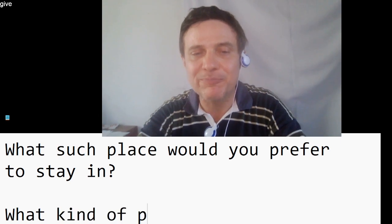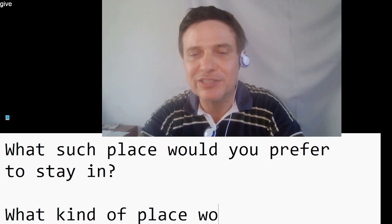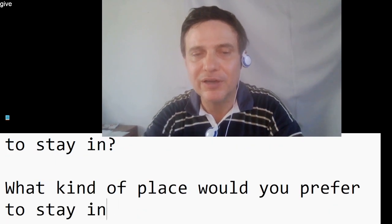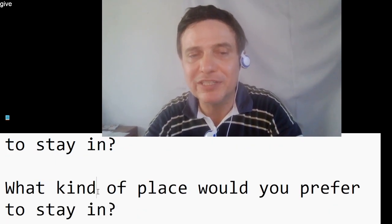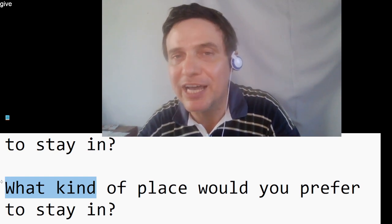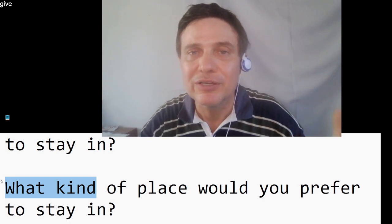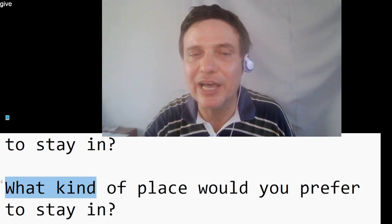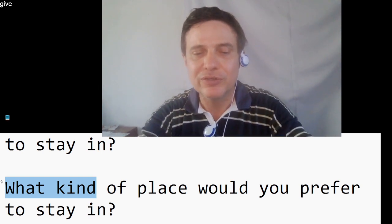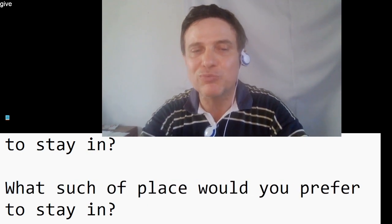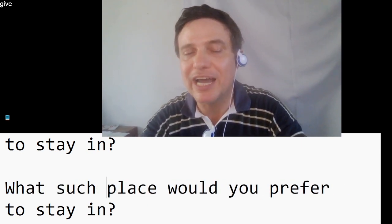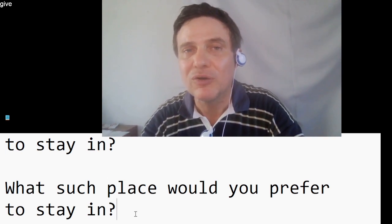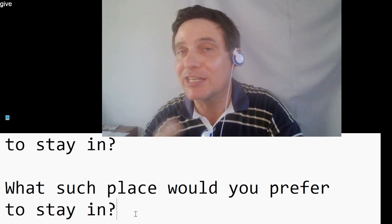Such equals similar to. In this sentence, 'what such place would you prefer to stay in?' — it's similar to asking, 'what kind of place would you like to stay?' Whenever you say 'what kind' — like 'what kind of car,' a car similar to what — 'what such car would you like?' Now, do we usually say this in English, 'what such place' instead of 'what kind of'? We could say that, yes. It is a bit unusual, but you can speak unusually.